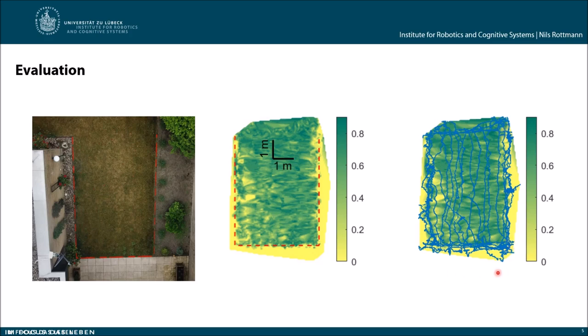However, we can see we have really distinct features, and this is the takeaway message. Our sensor works such that we can really apply it to an autonomous lawnmower to detect the mowing area.